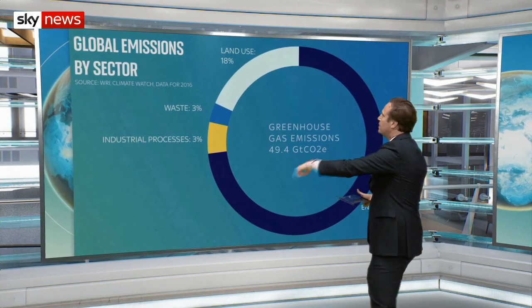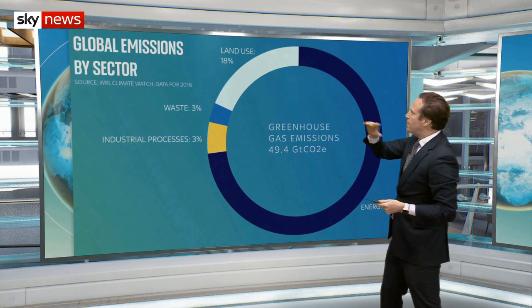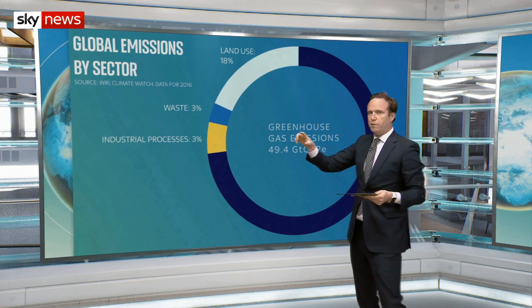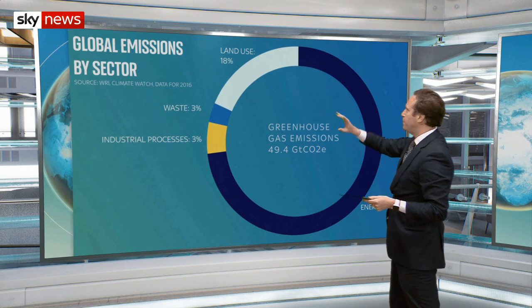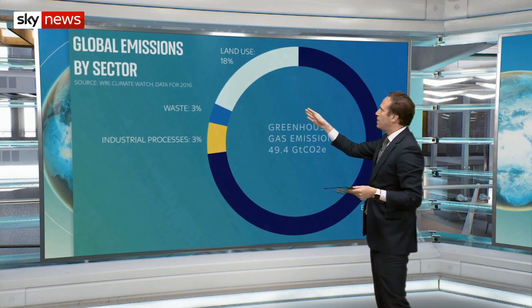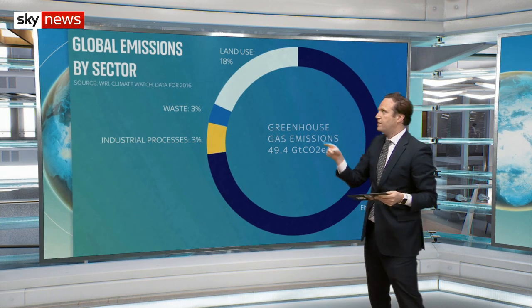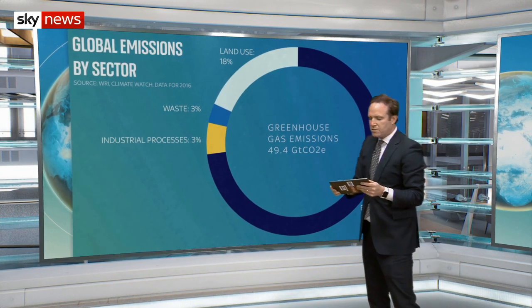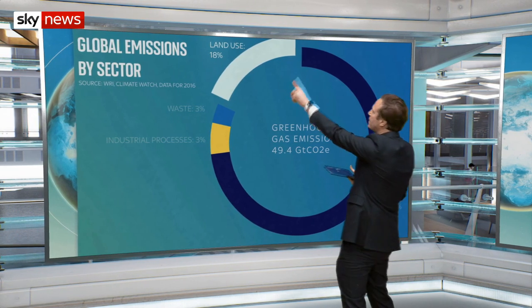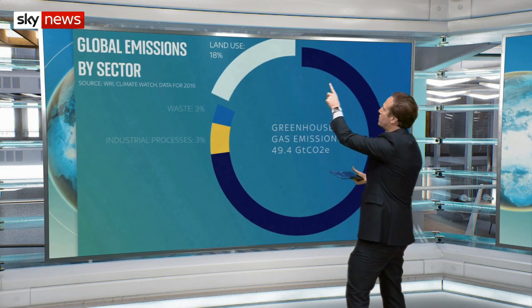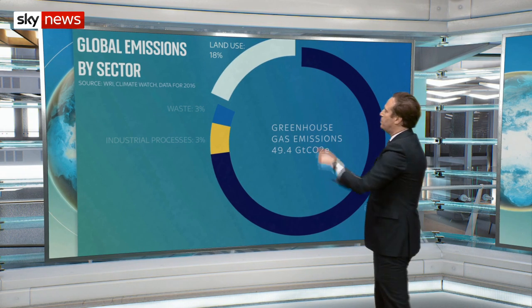This doughnut here represents total global emissions. It's for a few years ago, but it's still more or less representative of where we are now. It's about 50 gigatons — billions of tonnes of carbon dioxide or its equivalent, so other greenhouse gases as well. If we just start to break it down, let's have a look at land use. It's the second biggest chunk after energy, which is by far the biggest.